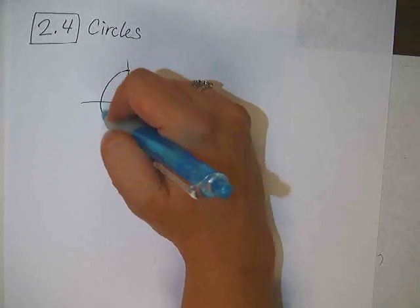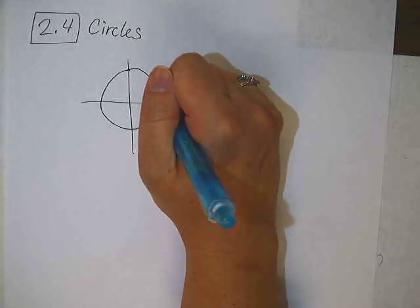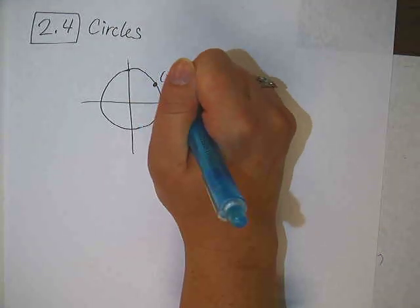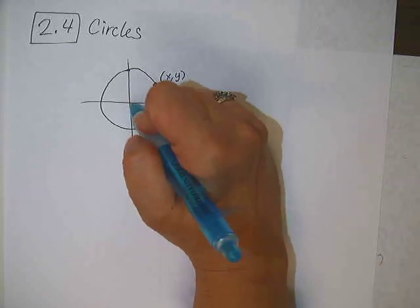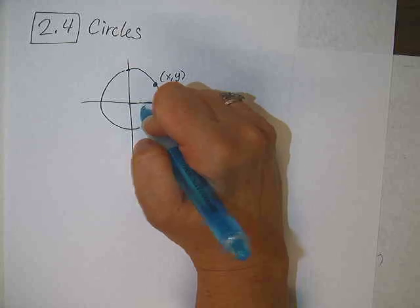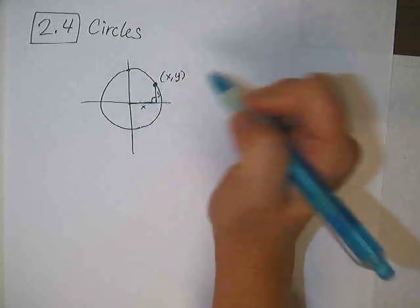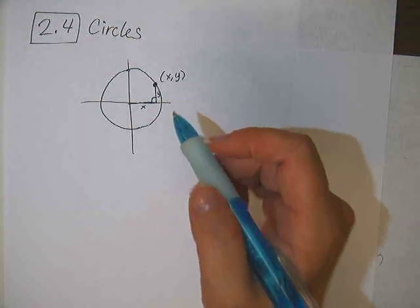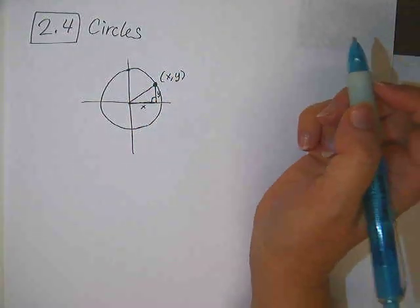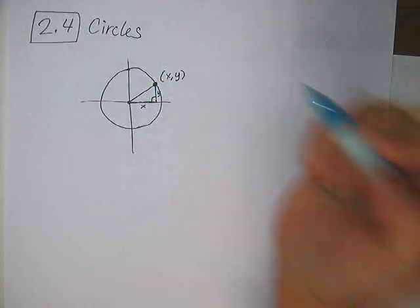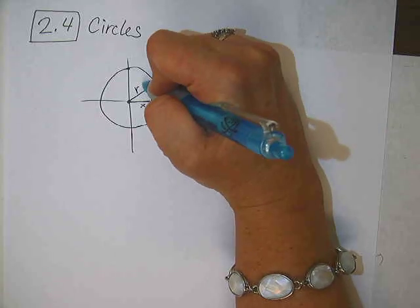If you have a circle on a graph, then any point on that circle, any point x, y, remember how an x value is always the horizontal distance and the y value is always the vertical distance. Any point on that circle is related to each other by the distance from the center to the outside of the circle, and what do we call that length? R, the radius, right?